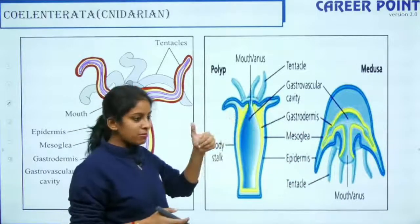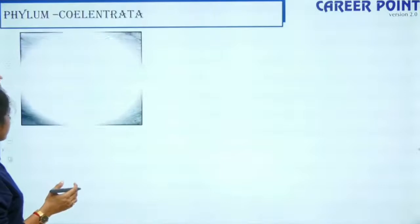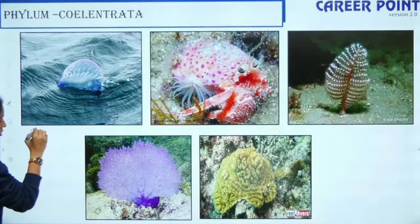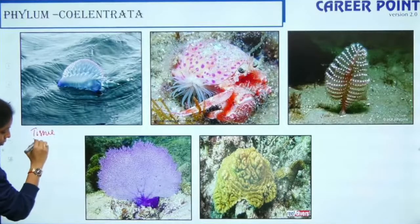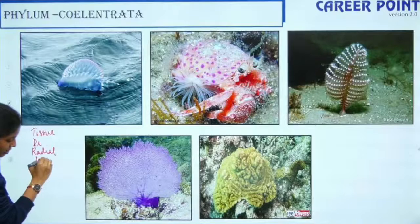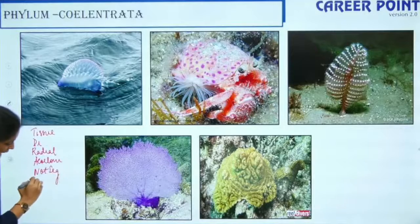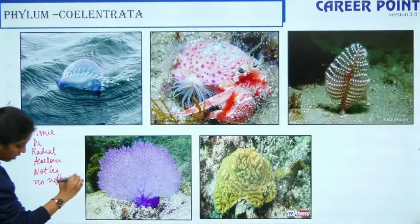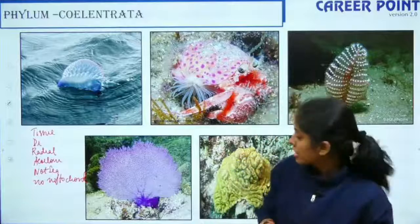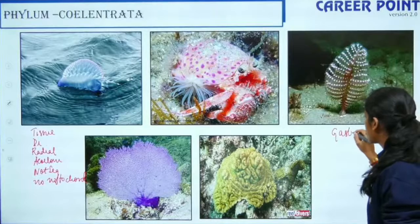For Coelenterata, the level of organization is tissue level. They are diploblastic and have radial symmetry. They are also acoelomate and not segmented, and they have no notochord as they are non-chordates. The key things to remember are why they are called Cnidarians and that they have a gastrovascular cavity.